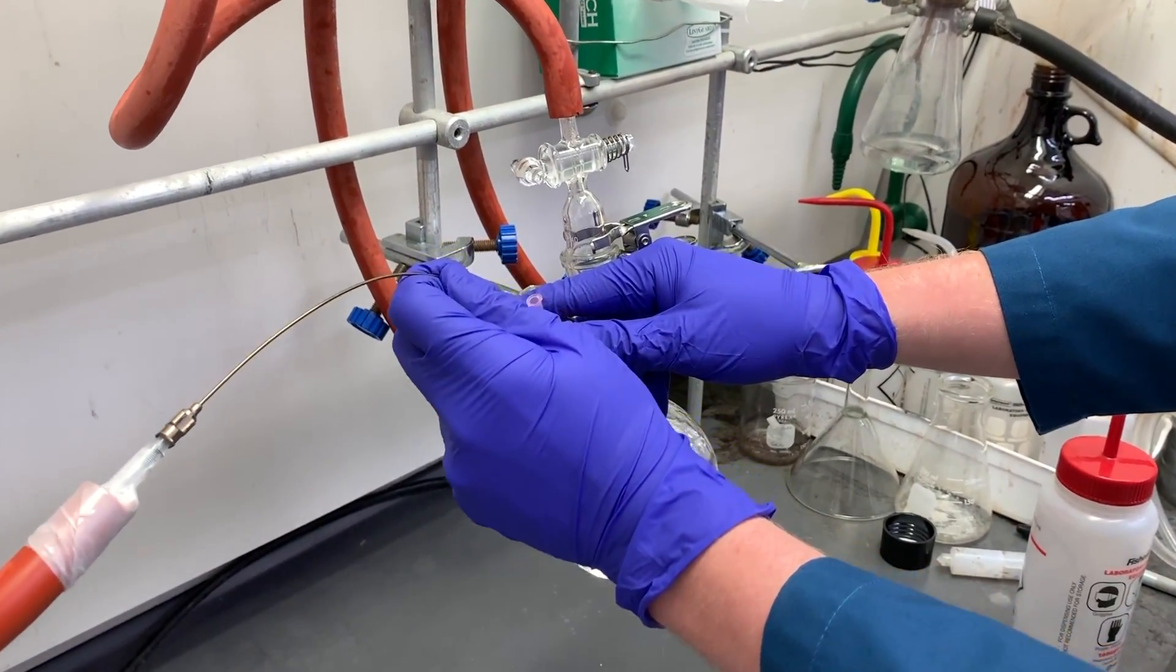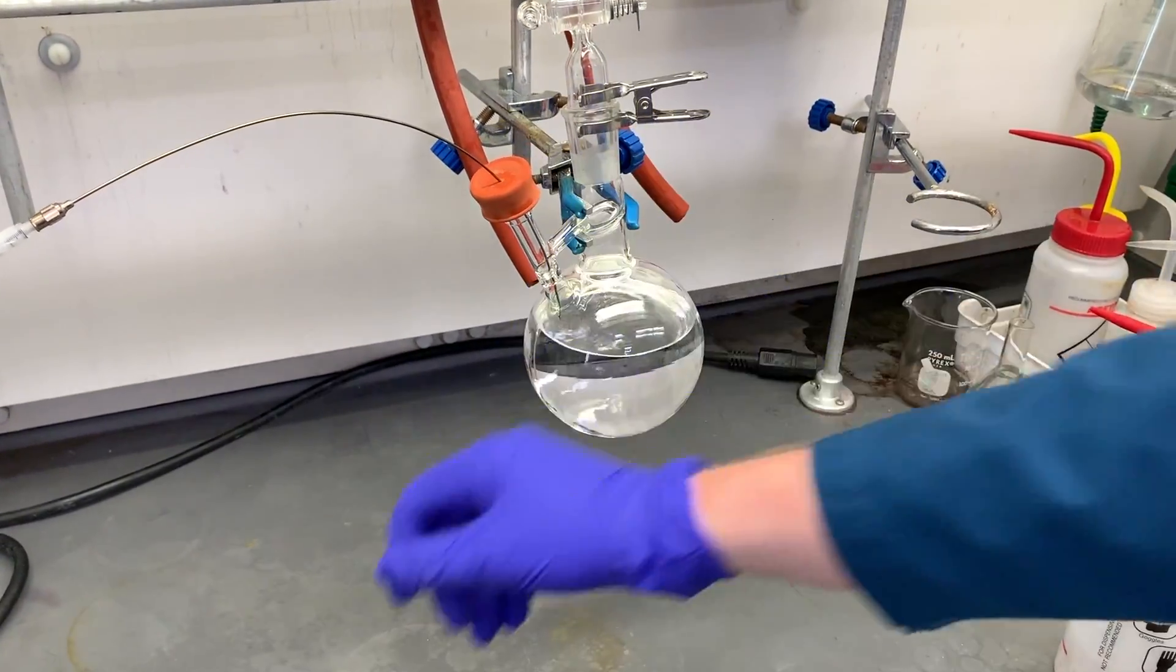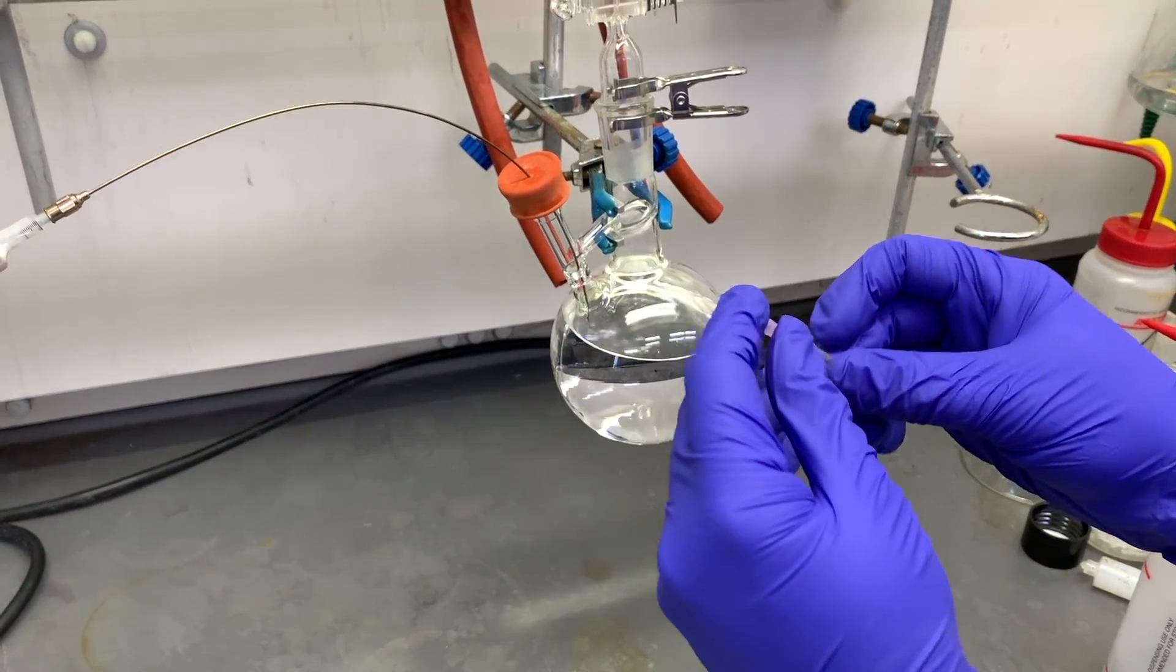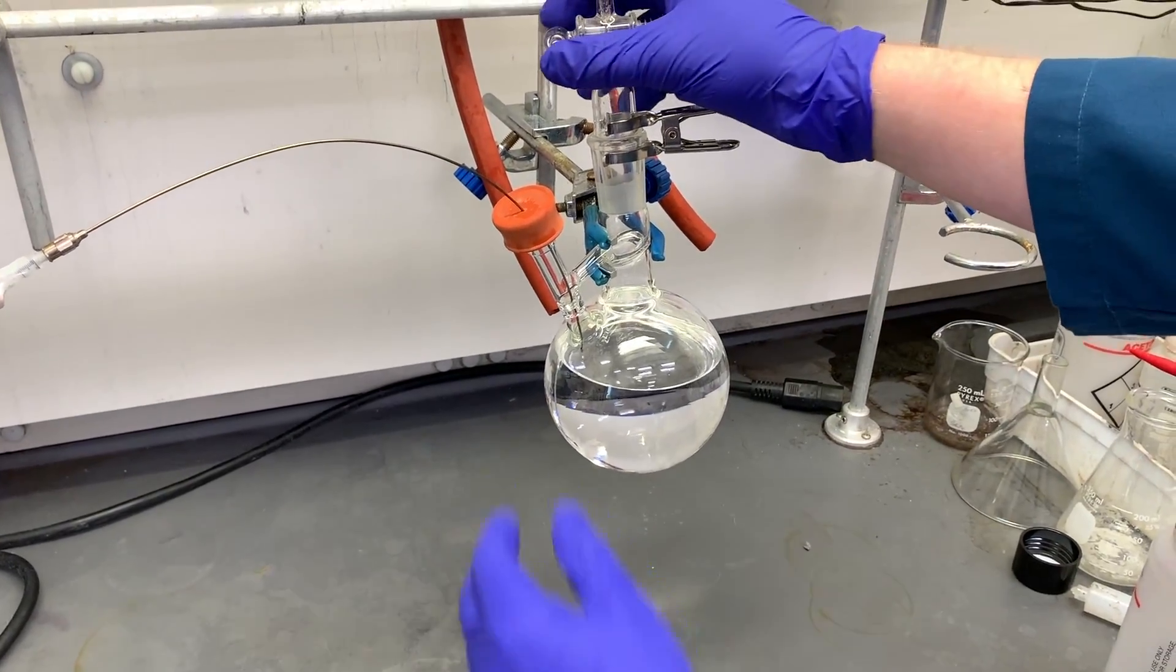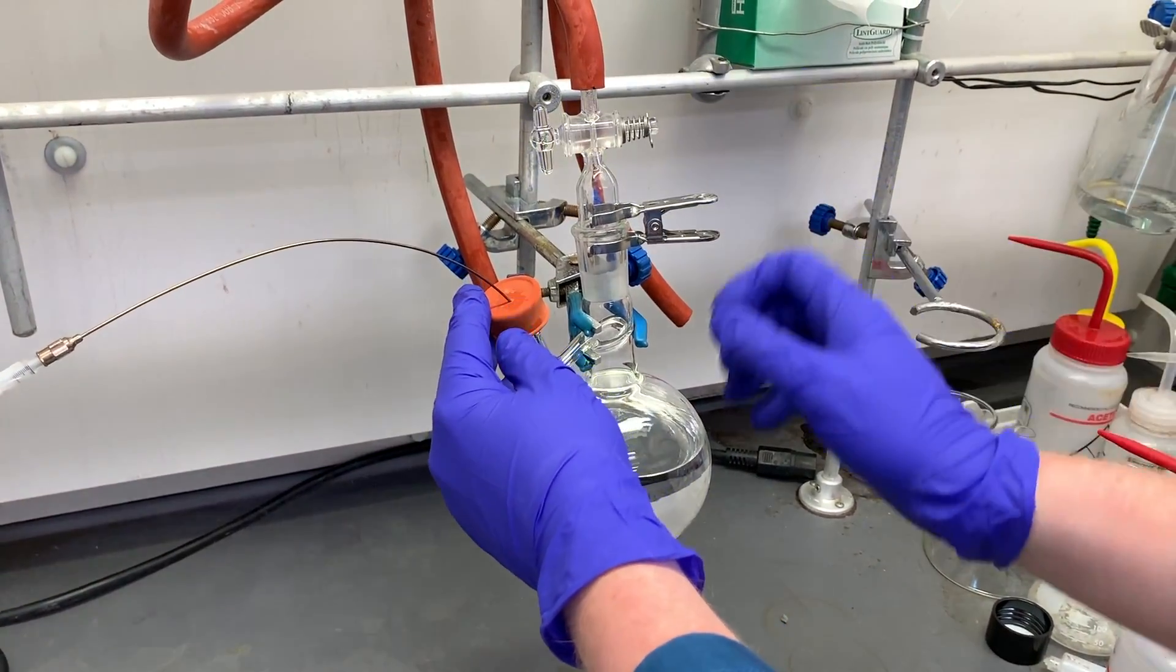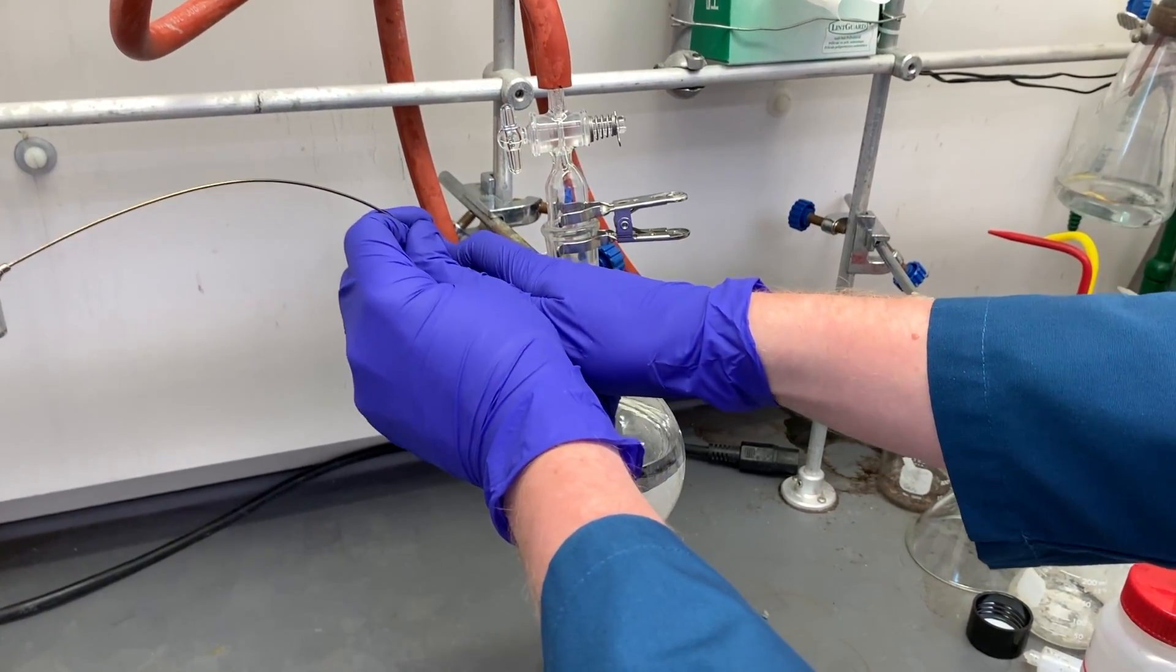After 20 minutes, pull your long needle up above the surface of the liquid while keeping it still inside the flask. Remove the pressure relief needle and then reopen the nitrogen inlet to the flask. You can now remove the long needle and the septum.